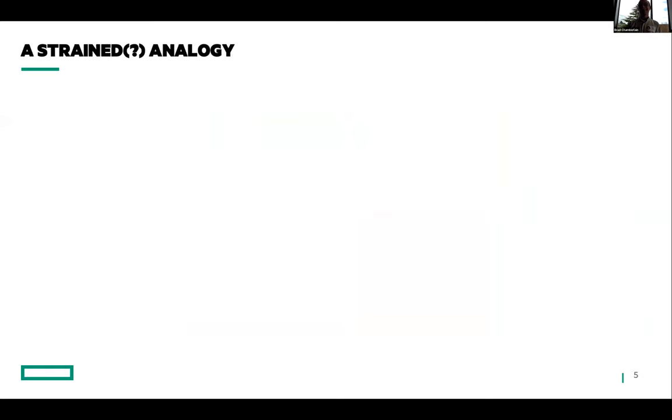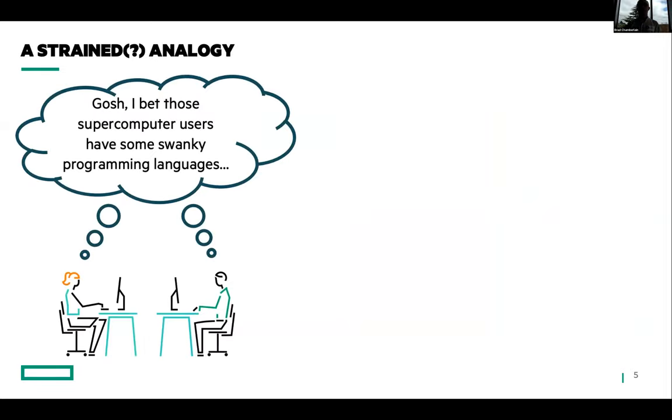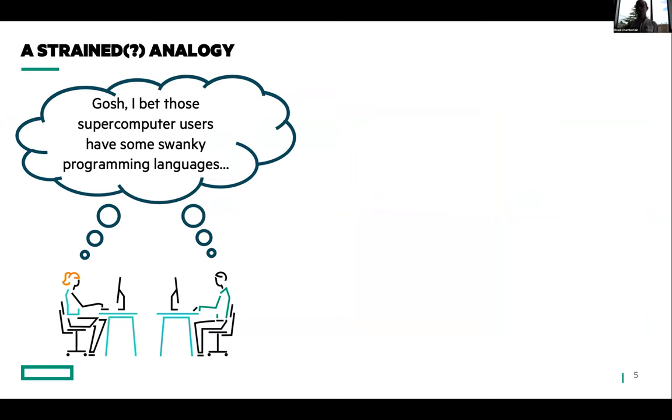My strained analogy is I think sometimes when I run into people in mainstream computing, they sort of have this sense of like, gosh, I bet those supercomputer users have some pretty swanky programming languages. And this is where my bad title comes in. This is sort of like me riding in the bus and saying, gosh, I bet those Le Mans racers have a pretty enviable driving experience. And I think that both of these are pretty big misconceptions because both of these communities care about speed, speed, speed, speed, and then barely maybe think about the users and their experiences.